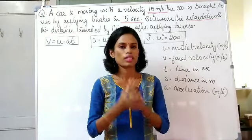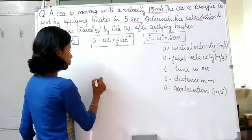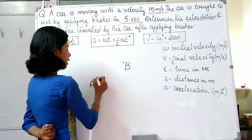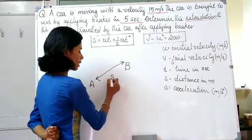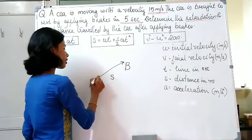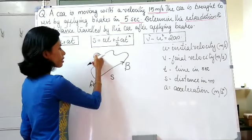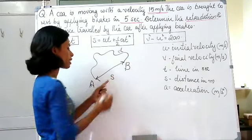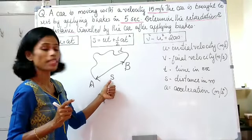First, let's discuss velocity. Before that, consider two points A and B. The shortest distance between A and B is the displacement, represented as S. But you can also take a longer path to reach from A to B — that path length is the distance travelled. So the distance travelled is different from displacement. A to B, the shortest distance between A and B is the displacement, denoted by S.